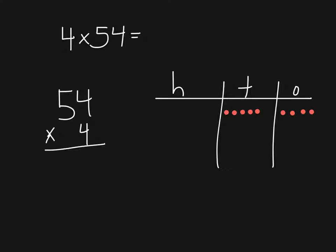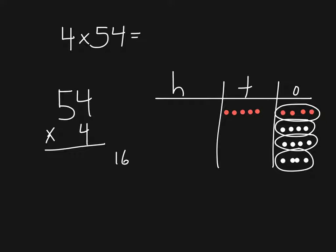I'm going to start by multiplying my ones. Four times four ones would give me a total of 16 dots — four equal groups of four ones. That can be rebundled as one ten and six ones. If I take ten of these dots and bundle them together, I can move that over into my tens column as one ten, leaving six ones remaining.